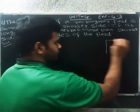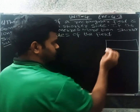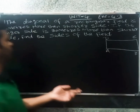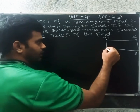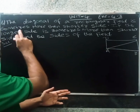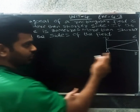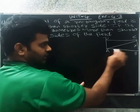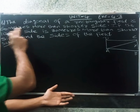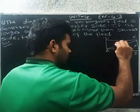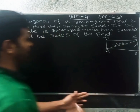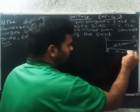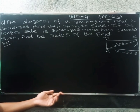So we have a rectangular field ABCD. The diagonal of the rectangular field is 60 meters more than the shorter side. The longer side is 30 meters more than the shorter side. This is the shorter side, this is the longer side, and this is the diagonal.